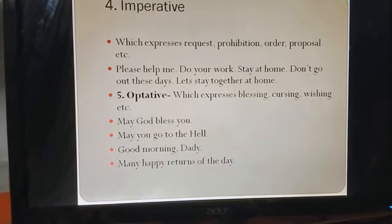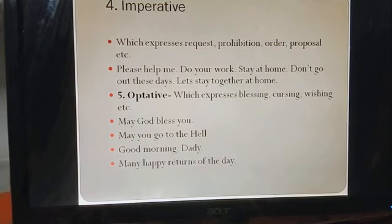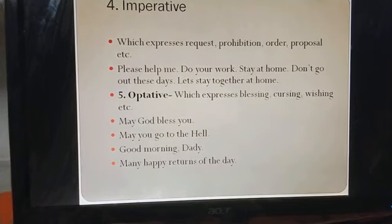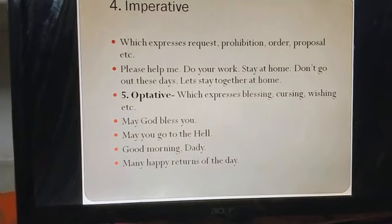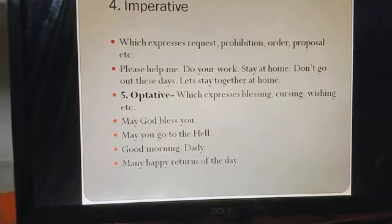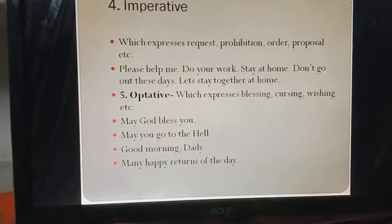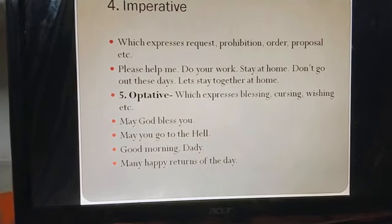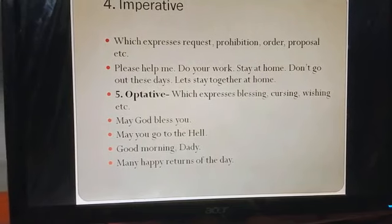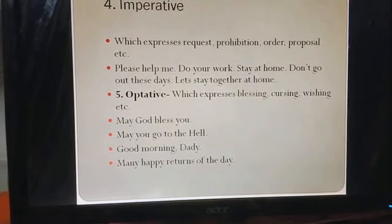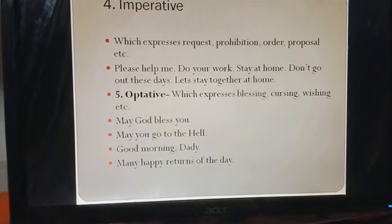Now we'll move on to our next important type, that is imperative. ये अपने आप में specific type के sentences होते हैं। इनका कोई एक particular structure नहीं होता, लेकिन ये sentences किसी request, prohibition, order, या proposal को express करते हैं। जैसे: 'Please help me' — request के लिए हम 'please' use करते हैं। अगर sentence verb की first form से शुरू होता है तो वो order/command हो सकता है — जैसे 'Do your work,' 'Stay at home.' Prohibition वाले sentences 'do not' से start होते हैं, और proposal वाले sentences 'let' से।